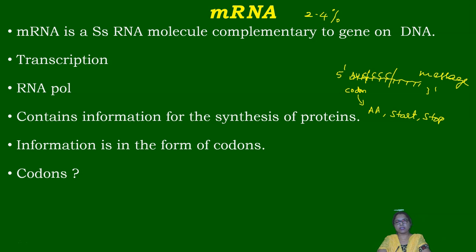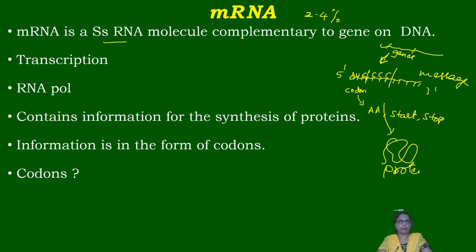mRNA accounts for only two to four percent of the total RNA — a very small number. It is actively synthesized and degraded. mRNA is single-stranded and is formed from DNA. Specific genes are transcribed to form mRNA, which on translation gives rise to a protein or polypeptide chain — this is the central dogma. For the synthesis of any RNA — mRNA, tRNA, or rRNA — RNA polymerase is required.